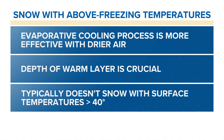The depth of the warm layer is also crucial. The snowflake will have a better chance of survival if the depth of the above-freezing layer is 500 feet above ground, as opposed to 5,000 feet above ground. Generally speaking, snow will not reach the ground if ground temperatures are greater than 40 degrees, although there are rare instances when it can snow in temperatures as warm as 45 degrees at the surface.